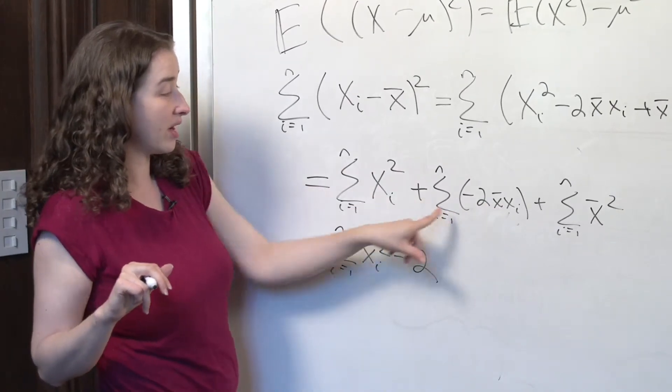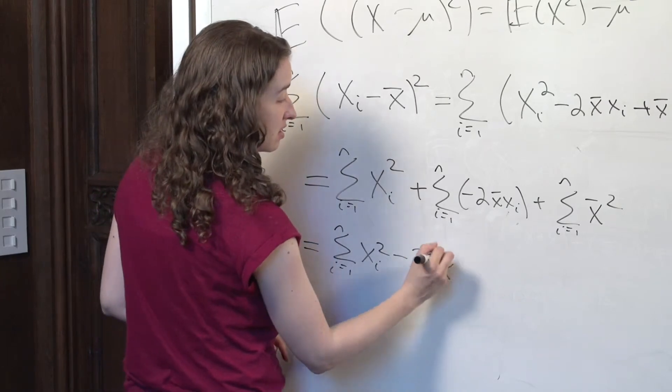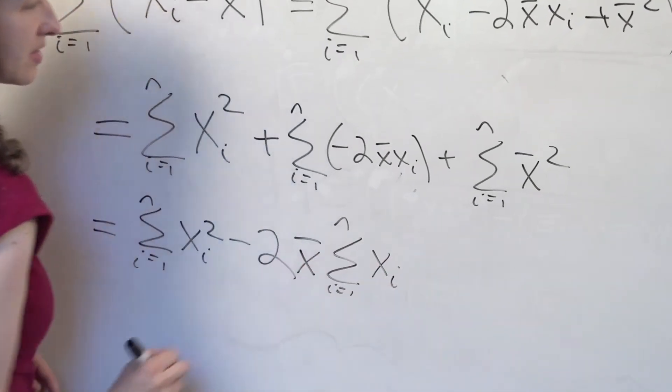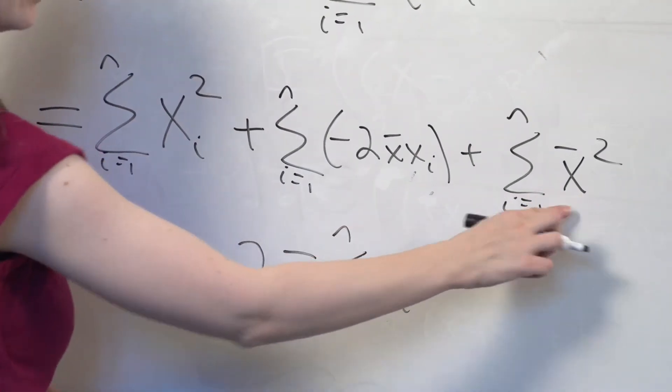In other words, x bar can also be factored out of that summation sign. So what I'm left with is the sum of all the xi's.